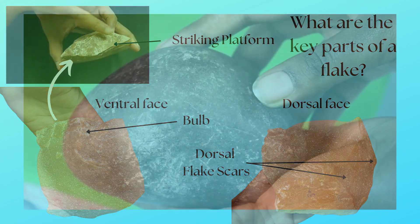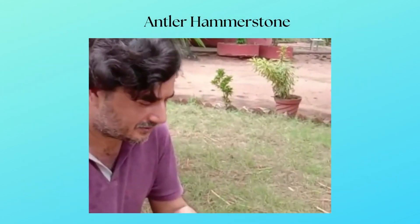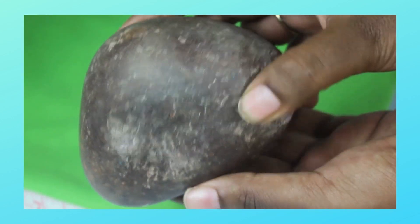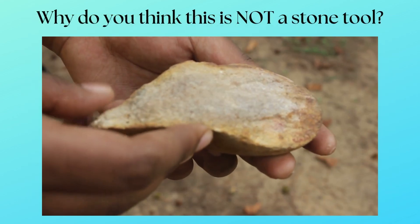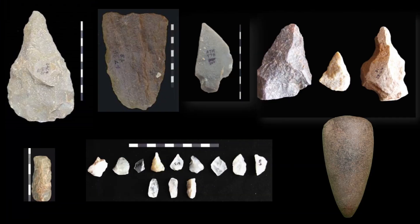We can also find hammers made of stone, bone, or antler that were used to knock off flakes. Can you see the stone hammer with marks of where it hit the core? Is this a tool? If not, why? We can come across a great deal of waste that comes from making tools as well. And finally, we also find lots of tools from prehistory.